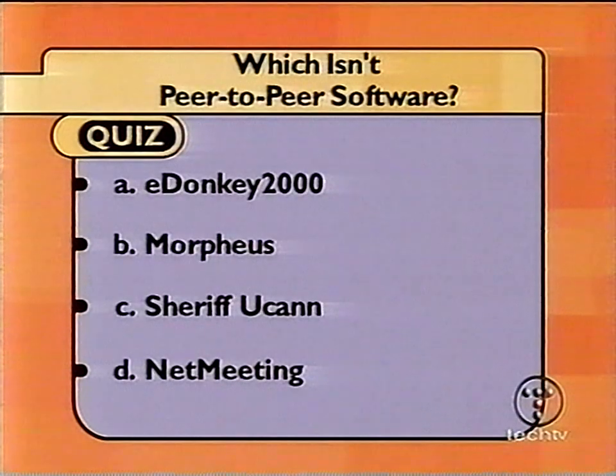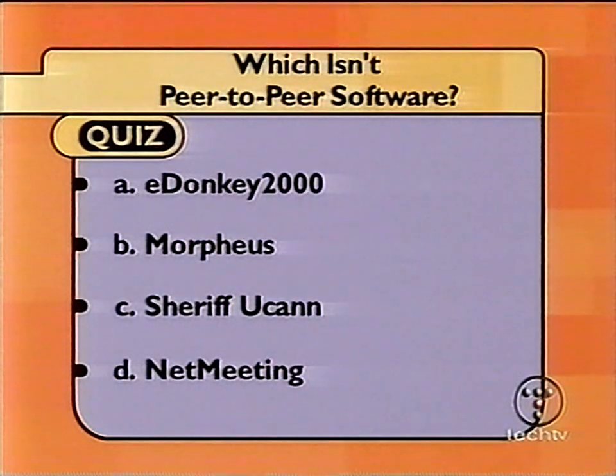Before the break, we asked which is not peer-to-peer software: eDonkey 2000, Morpheus, Sheriff UCAN, or NetMeeting? The answer is actually C — Sheriff UCAN — but that doesn't exist yet.